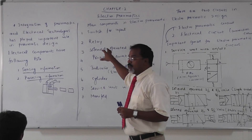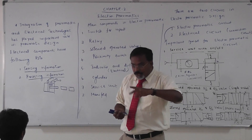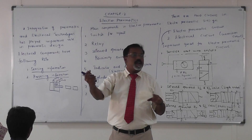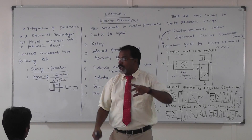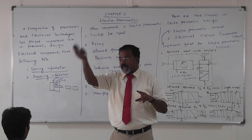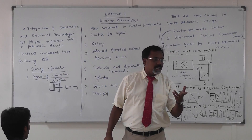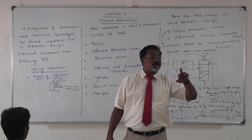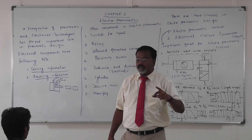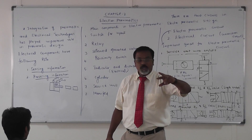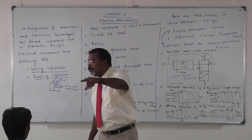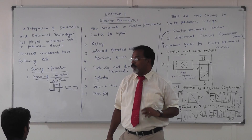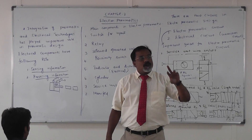In electro-pneumatic, for the AND gate, you use two switches. Only when both switches are operated will the flow go to the solenoid operated valve. You don't need any mechanical valves like a dual pressure valve, shuttle valve, or check valve. Instead, you use electrical buttons — if you operate both buttons, the signal goes to the solenoid operated valve, which then allows air to flow to the cylinder.